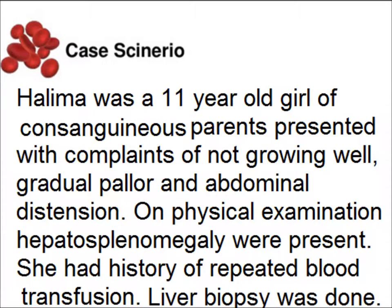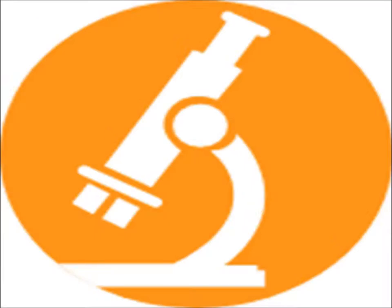The clinical presentation: an 11-year-old girl of consanguineous parents presented with complaints of not growing well, gradual pallor, and abdominal distension. On physical examination, hepatosplenomegaly was present. She had a history of repeated blood transfusions. A liver biopsy was performed.